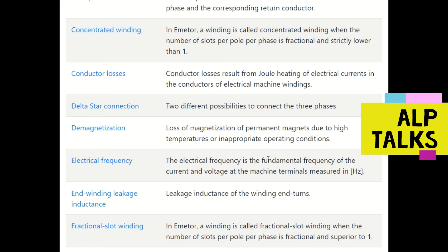Delta and star connections are two different possibilities in three-phase machines — one is star connection and another is delta connection. Demagnetization is the loss of magnetization of permanent magnets due to high temperature or inappropriate operating conditions.